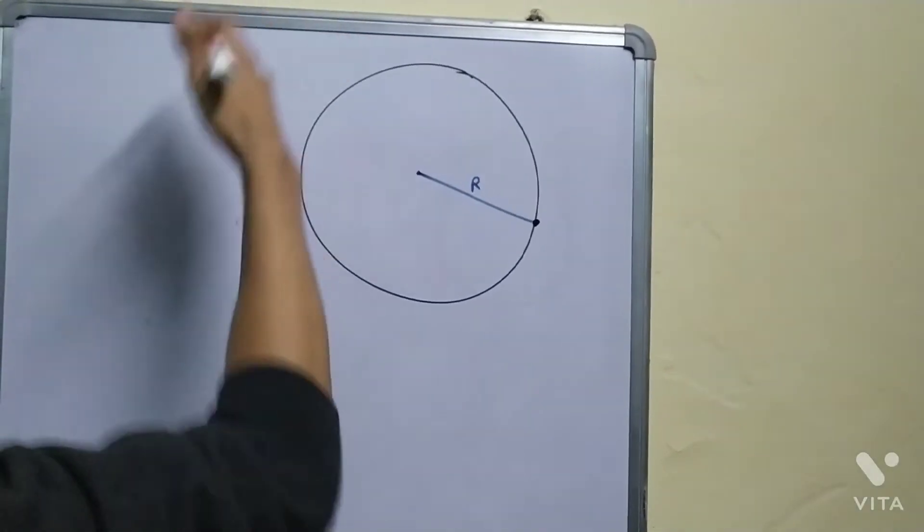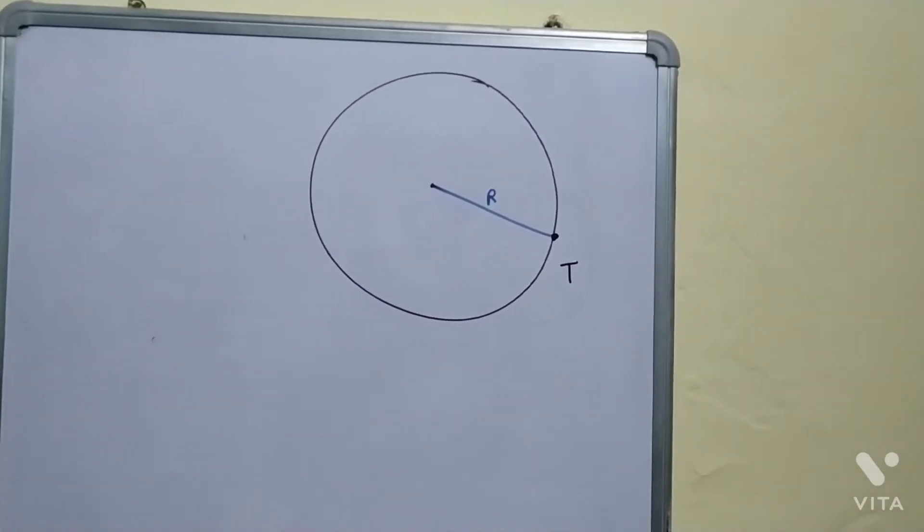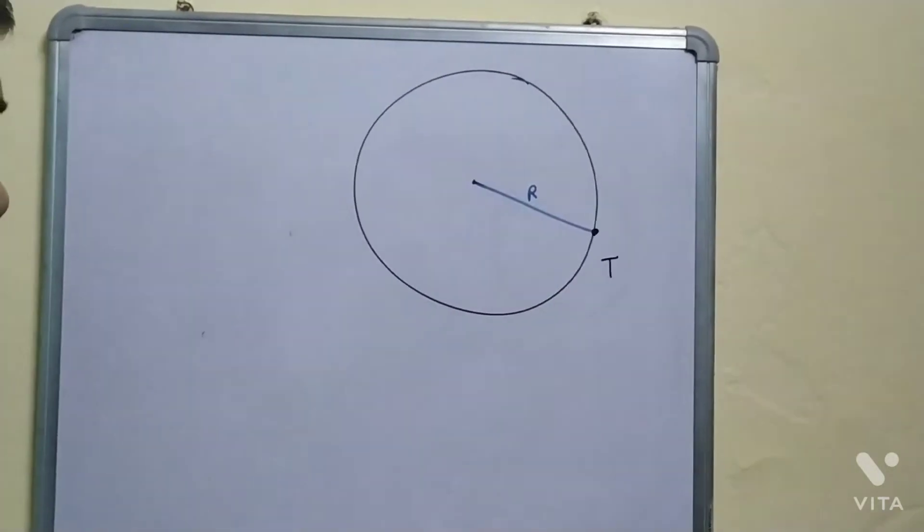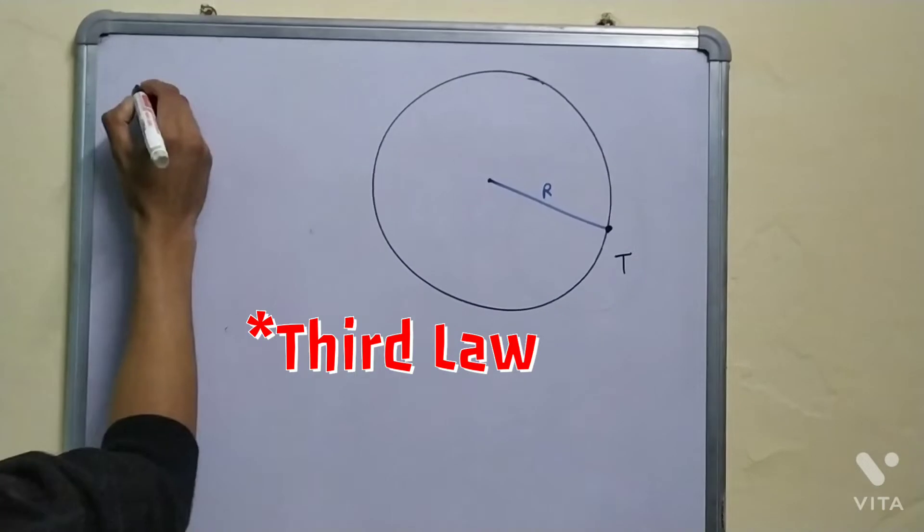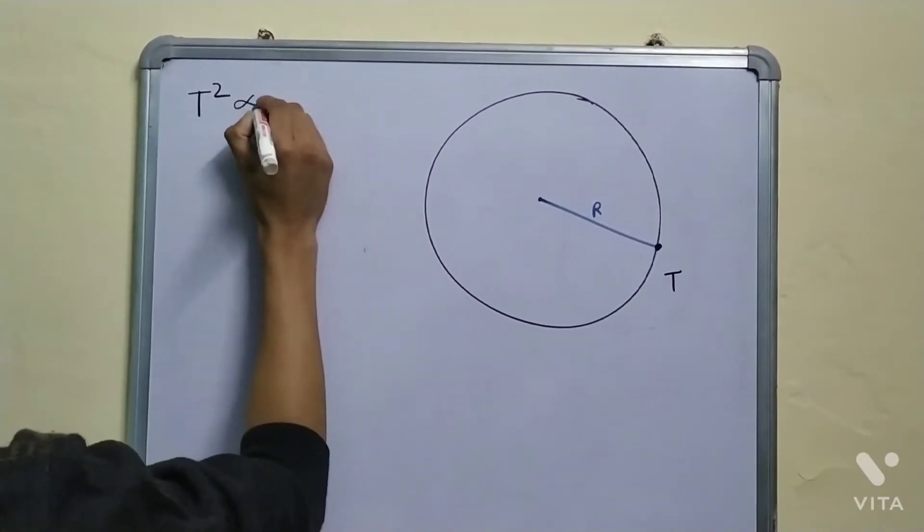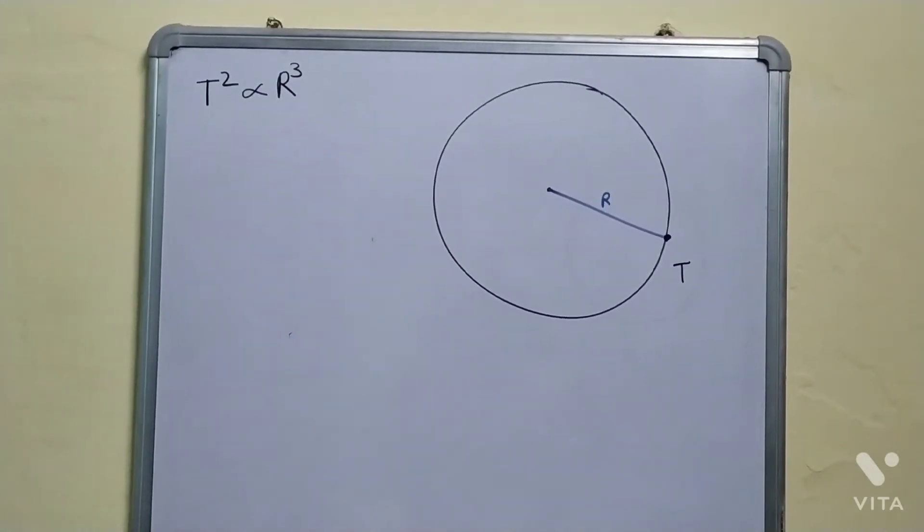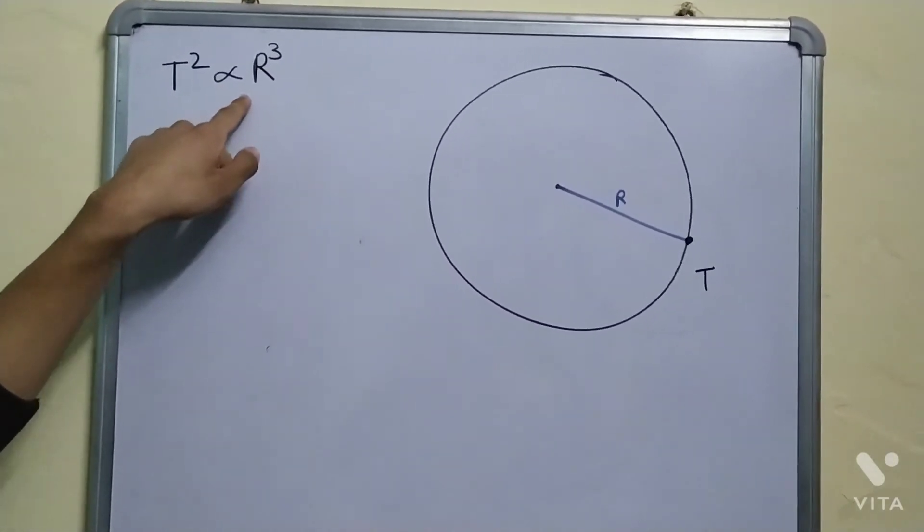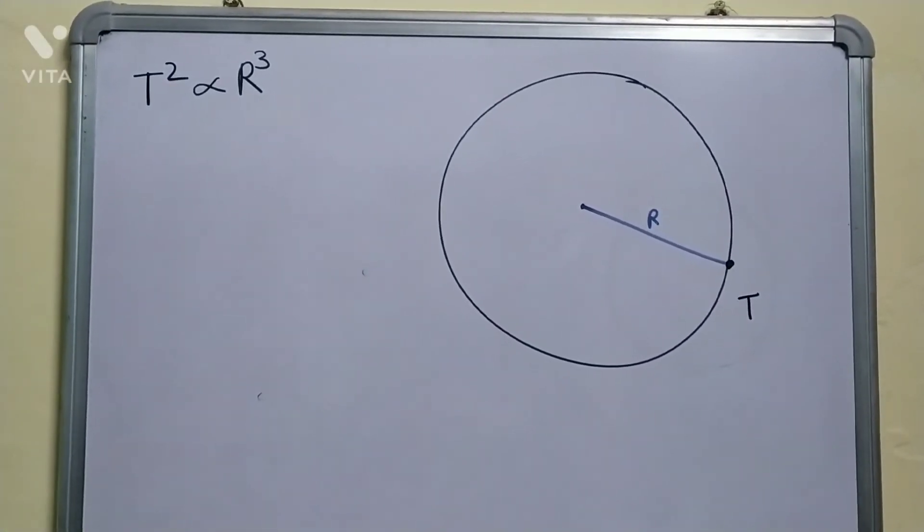And it takes some time, capital T, to make one full revolution. Now Kepler's second law states that this T square is proportional to r cube. The square of the time period is proportional to the cube of the distance. This is what Kepler's law says.